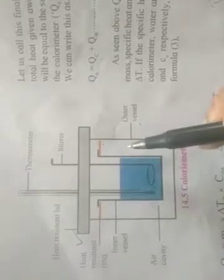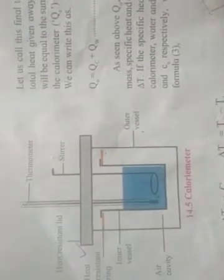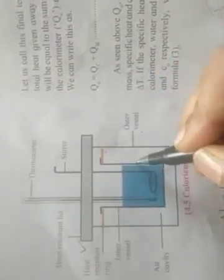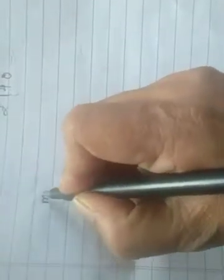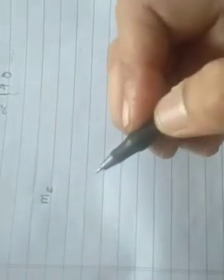For that, we need to know the mass of the calorimeter, the specific heat of a particular substance, and the temperature increase or decrease. Let the mass of the calorimeter be named as small m with a subscript c — so mc means the mass of the calorimeter.